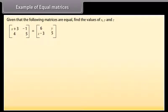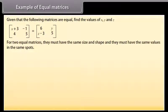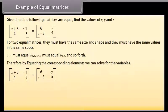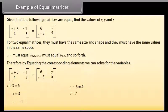Example of equal matrices. Given that the following matrices are equal, find the values of X, Y, and Z. For two equal matrices they must have the same size and shape and the same values in the same positions, so A₁₁ equals B₁₁, A₁₂ equals B₁₂, and so forth. By equating the corresponding elements: X plus 3 equals 6, so X equals 3; Y equals -1; Z minus 3 equals 4, so Z equals 7.